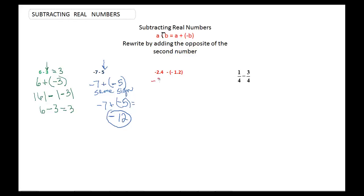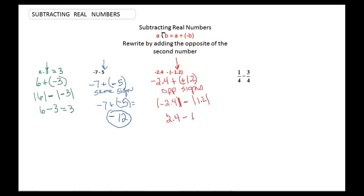In this case, we start with negative 2.4. We're going to add the opposite of negative 1.2. The opposite of negative 1.2 is positive 1.2. Again, we have opposite signs. So we can say 2.4 is bigger than 1.2 if we forget about the signs for a second. The absolute value of negative 2.4 minus the absolute value of 1.2 is positive 2.4 minus 1.2. If we subtract those, we get 1.2. And 2.4 is our larger number, so it's a negative 1.2.